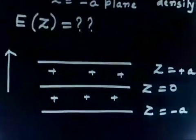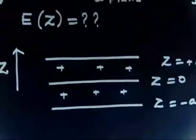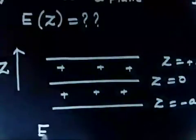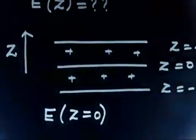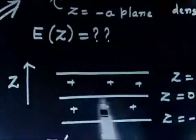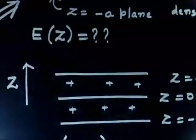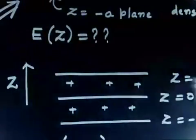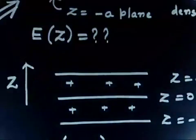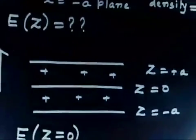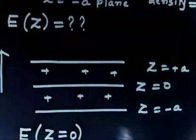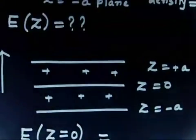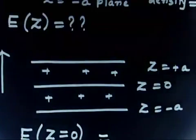Let us find the electric field first at z equals 0. What will be the electric field when z equals 0? This plane is infinitely long — it goes infinite on both sides. There is nothing to calculate; you can give the answer only by looking at the symmetry.